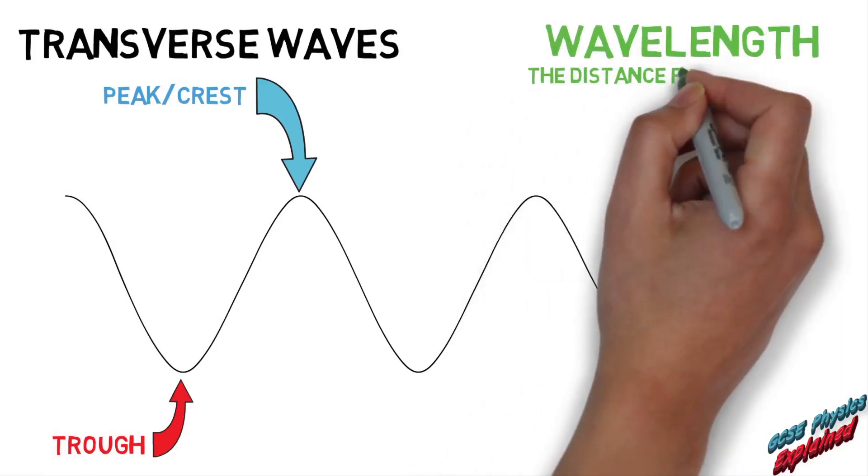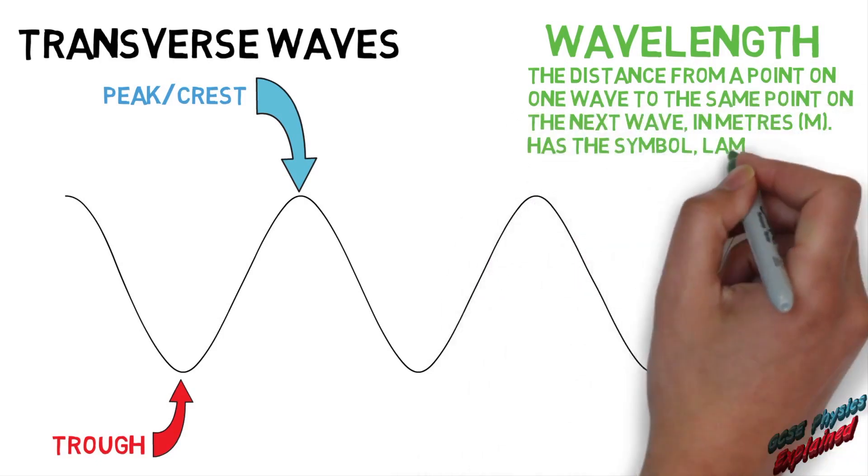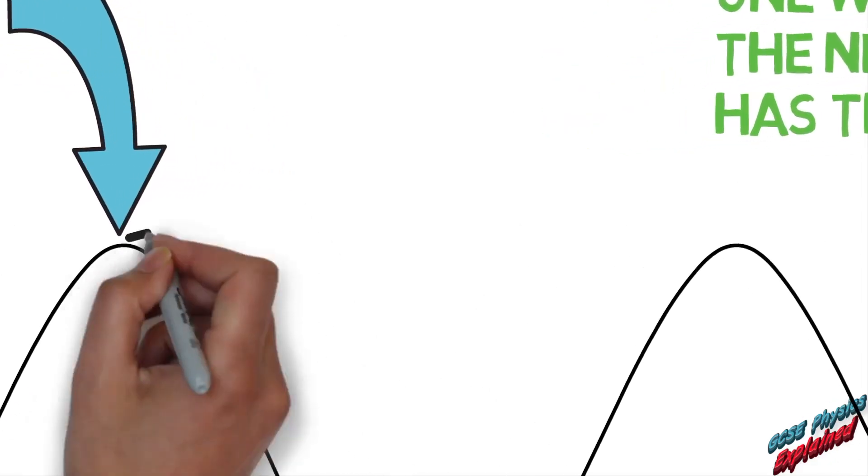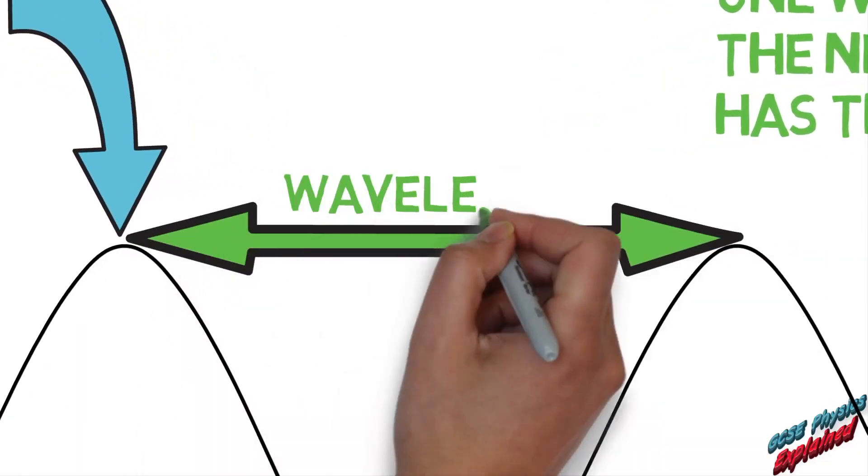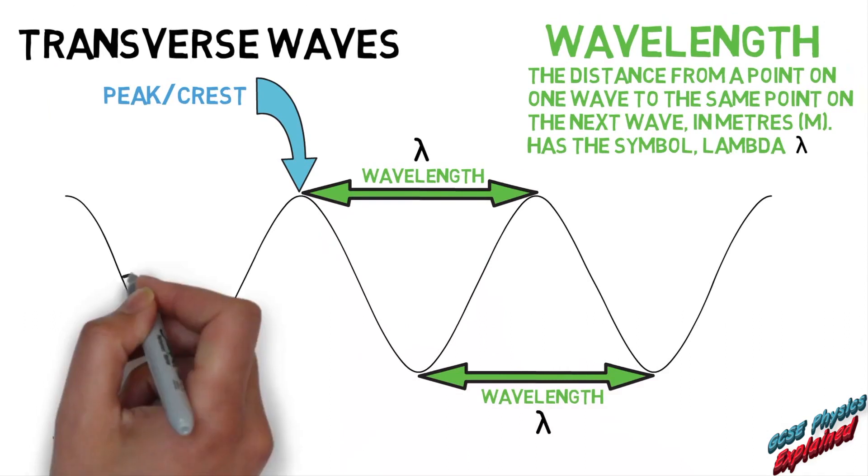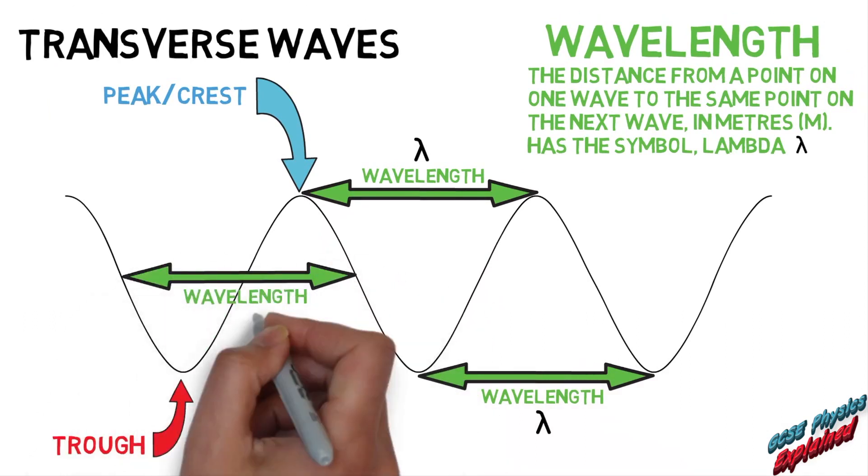Wavelength is the distance from a point on one wave to the same point on the next wave in metres. It has the symbol lambda. The wavelength can easily be shown by drawing from one peak to the next peak, or from one trough to the next trough, or from one point on one wave to the same point on the next wave.